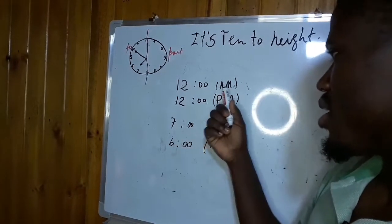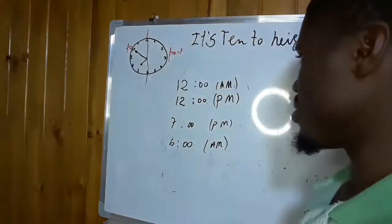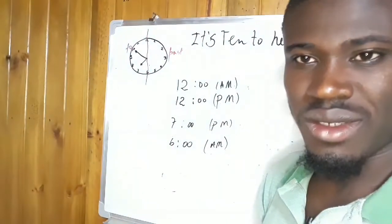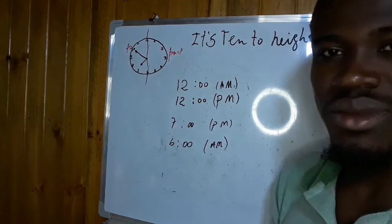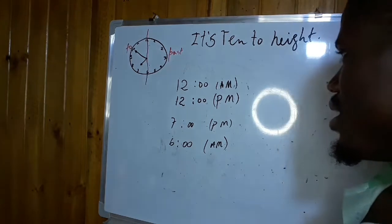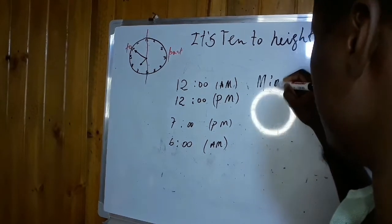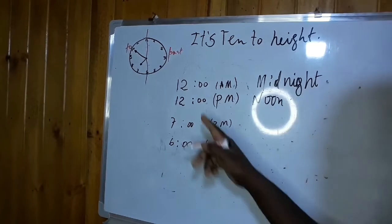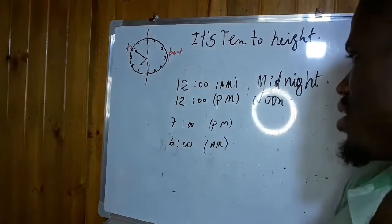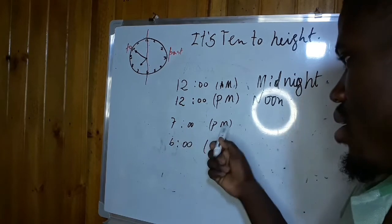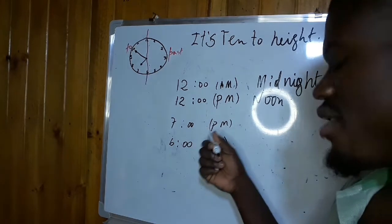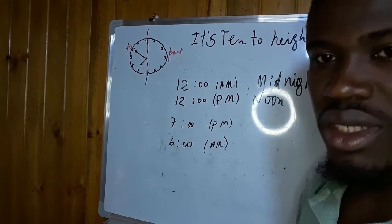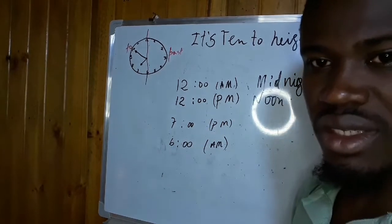Now we have 12 a.m. — how do we say 12 a.m.? That means at night, so we say midnight. And 12 p.m. — that's noon, it's noon. So midnight and noon. Here we have 7 o'clock in the evening — 7 p.m. And 6 a.m. — that's 6 in the morning. 7 in the evening.